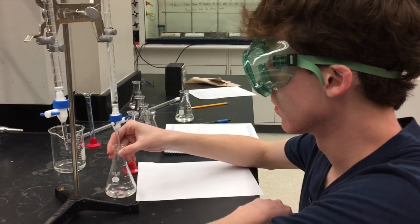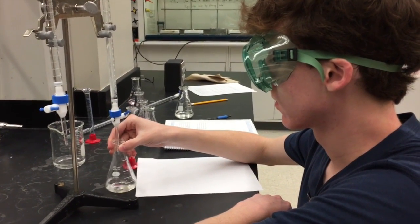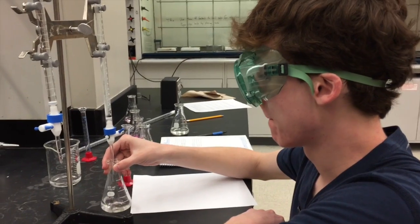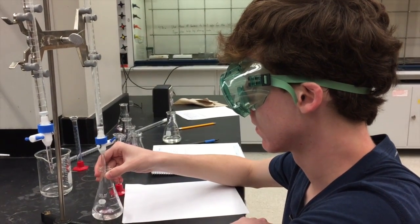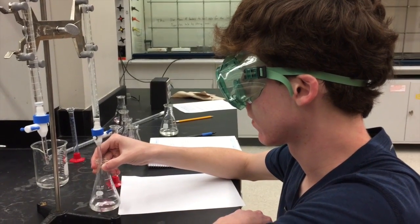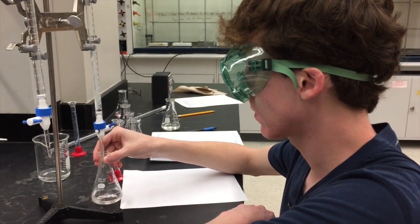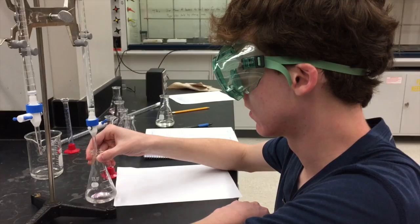Rinse out the burette with water and use a small amount of sodium hydroxide, or whatever solution is intended to be in the burette, to prime it. Rotate the burette with the solution inside so that the inside can be coated with the solution. Repeat this three times.